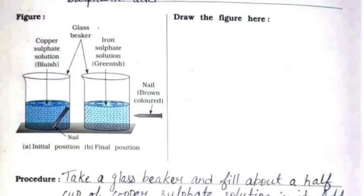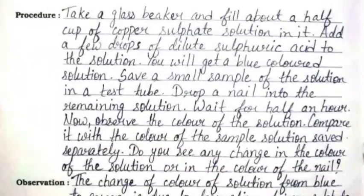The procedure: take a glass beaker and fill about half a cup of copper sulfate solution in it. Add a few drops of dilute sulfuric acid to the solution — you will get a blue colored solution. Save a small sample of the solution in a test tube, then drop a nail into the remaining solution.